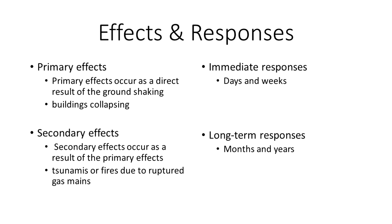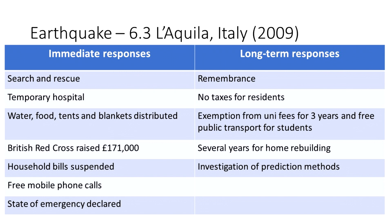Immediate responses are things that happen within the days and weeks after a disaster, whereas long-term responses usually take months or years and involve rebuilding or restructuring the area. Some immediate response examples for Italy included the Italian Red Cross searching for survivors, temporary hospitals being constructed, and mortgages and bills being suspended.